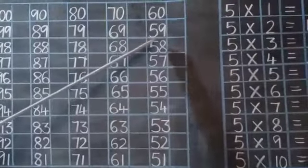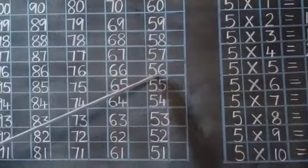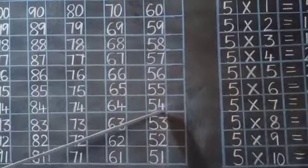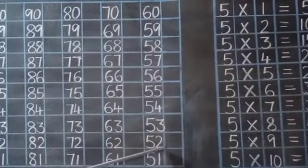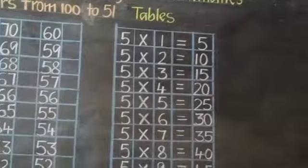60, 59, 58, 57, 56, 55, 54, 53, 52, 51. The next concept is tables of 5.